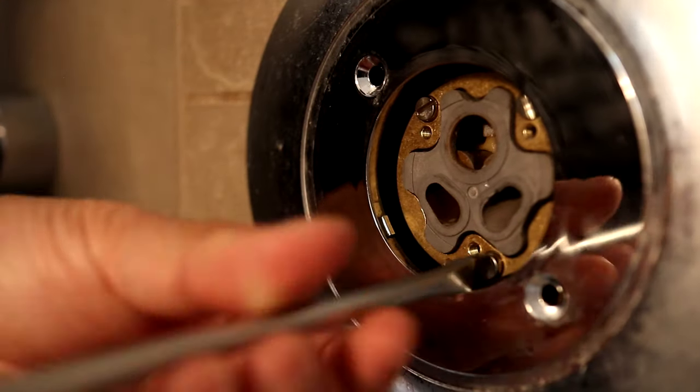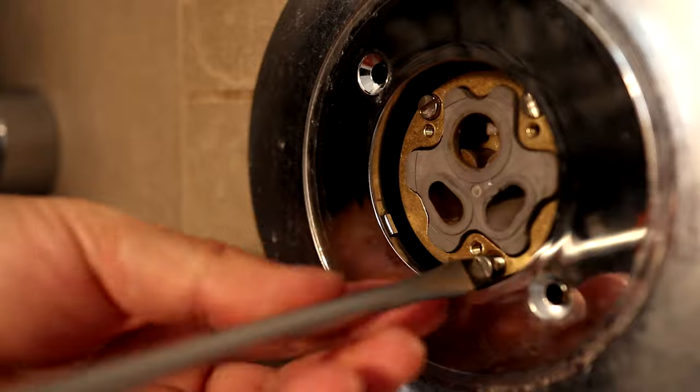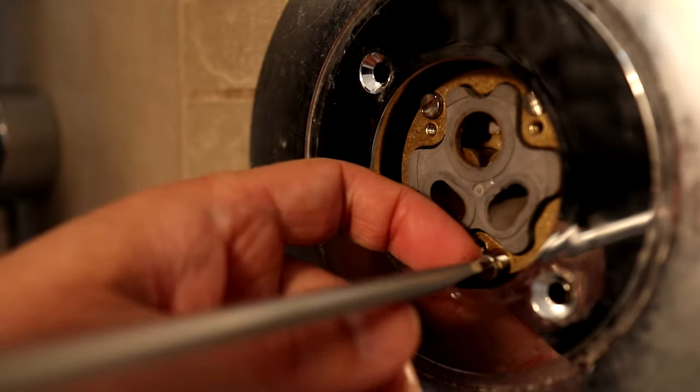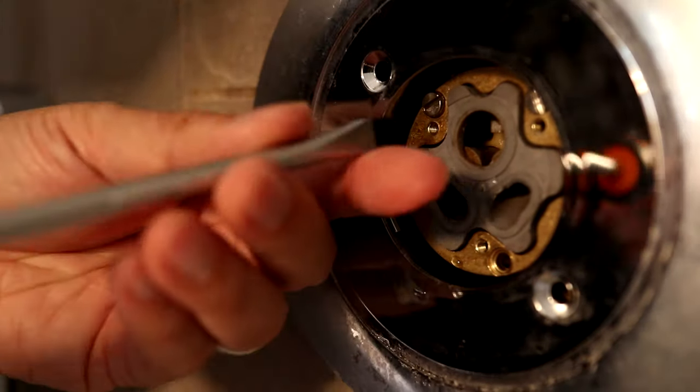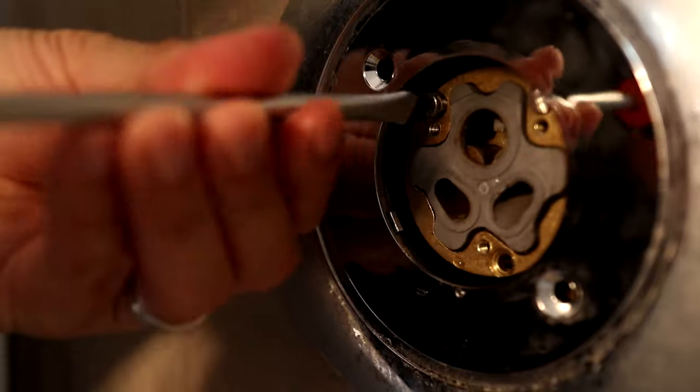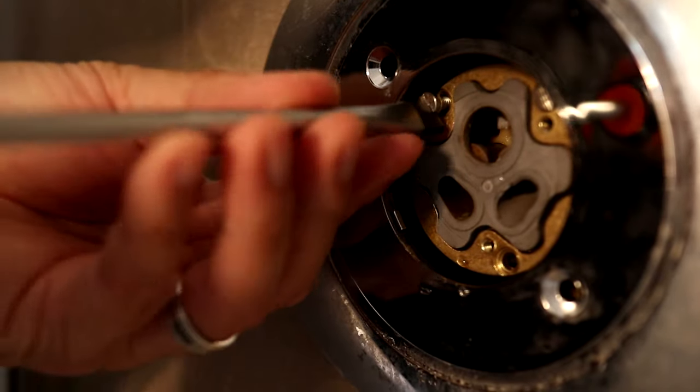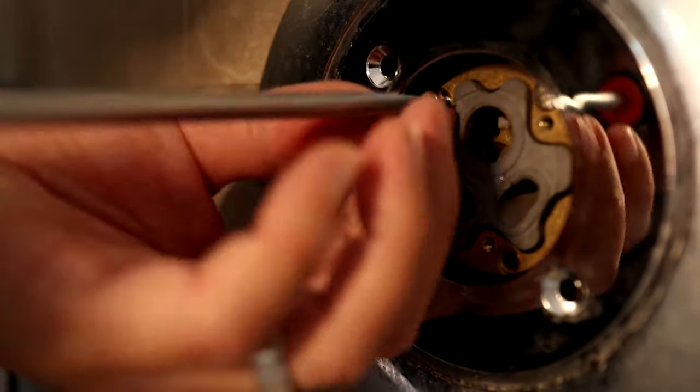This inner part with the three holes is the American Standard pressure balancing unit. It's held in place by a brass retaining ring. Here carefully take out the three screws around the ring. These screws are pretty short and you don't want them falling inside the wall.